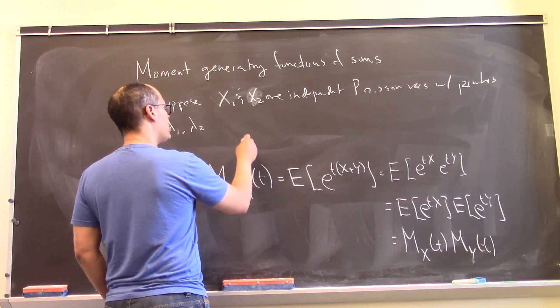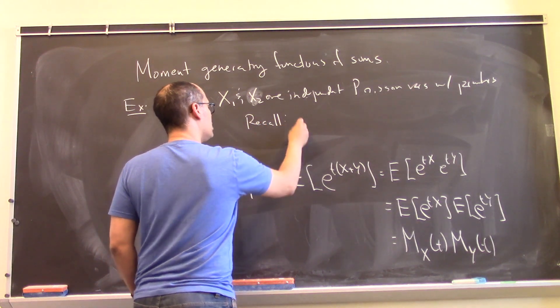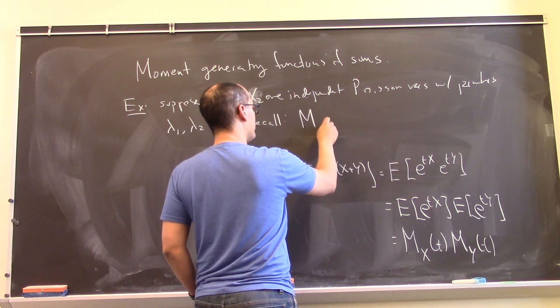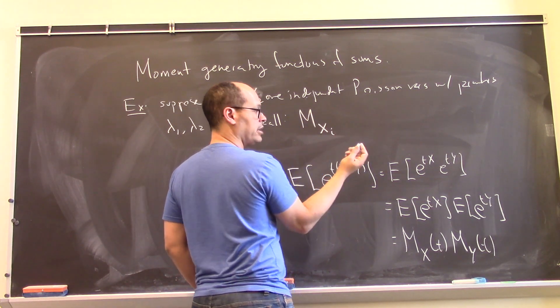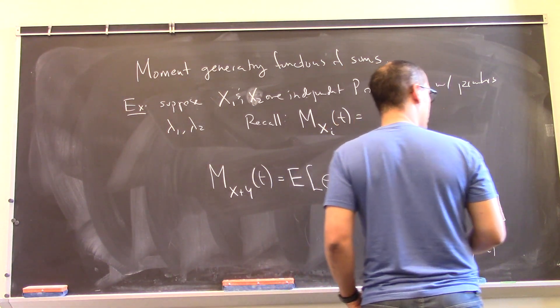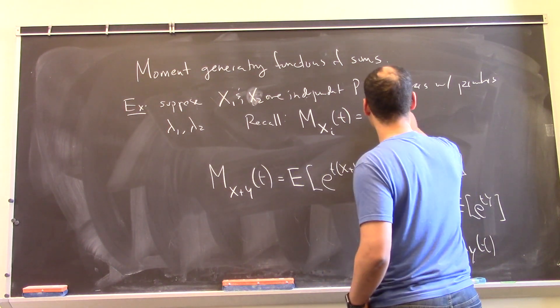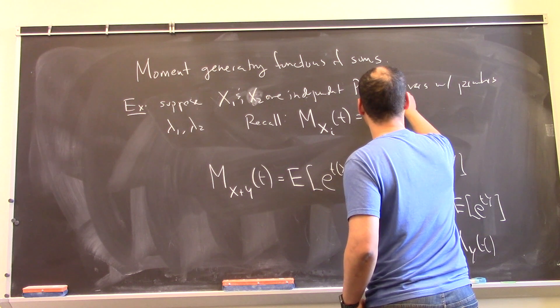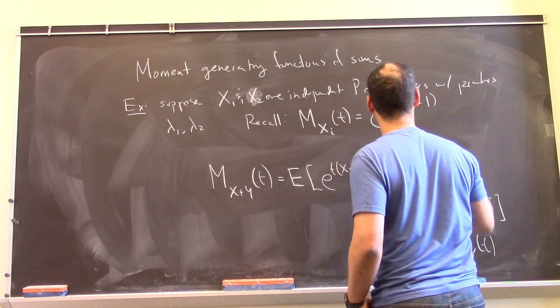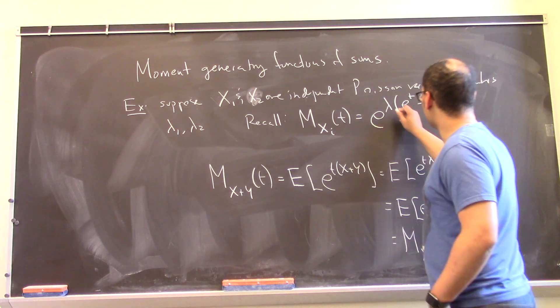Well, recall the moment generating function of one of these Poisson variables, let's say the i-th one where i is 1 or 2, is given by this kind of funny exponential expression e to the lambda i times e to the t minus 1.